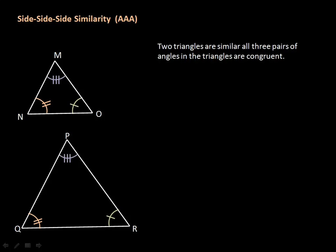This is actually the one I mentioned when we did triangle congruence — the 'no AAA' case. If you have three angles that are all congruent, the triangles will be the same shape but different sizes, which is bad for congruence but good for similarity. You can see that angle R is congruent to angle O, M and P are congruent, and Q and N are congruent — same shape, different sizes.